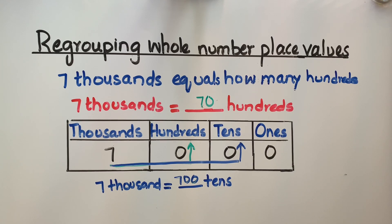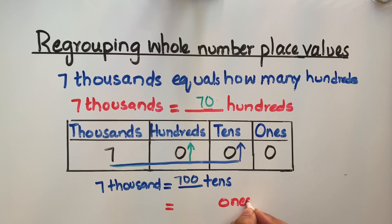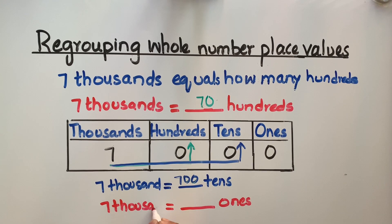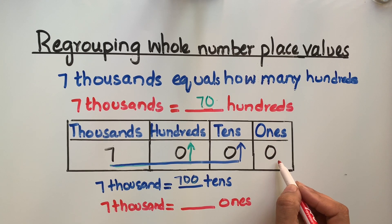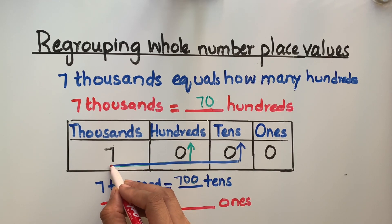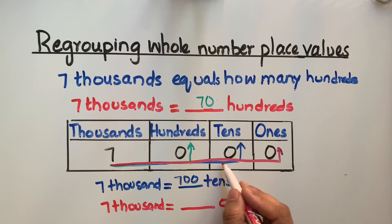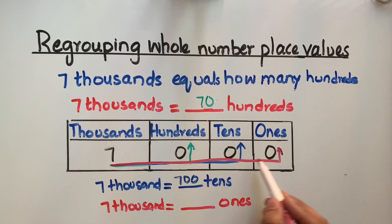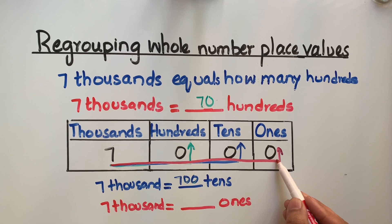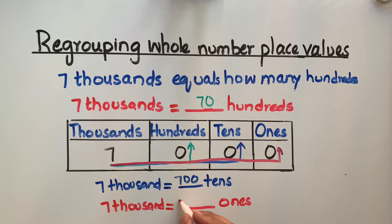Now we have to find out how many ones we have in seven thousand. Since we are targeting the ones column, we read from the left all the way to the ones column. How many zeros do we have here? One, two, three. In seven thousand, we have three zeros. So seven thousand ones are in seven thousand. This is the answer.